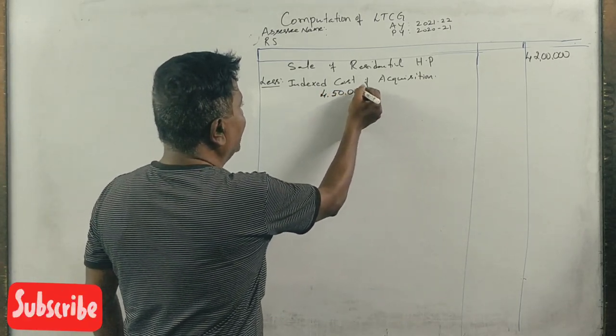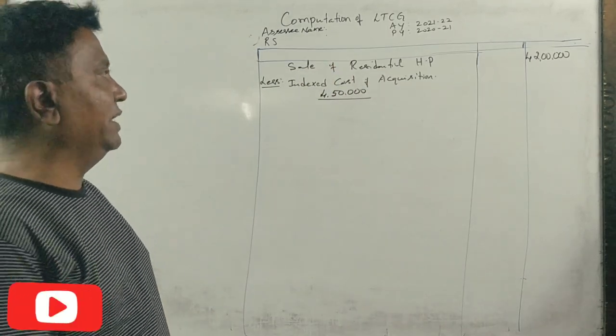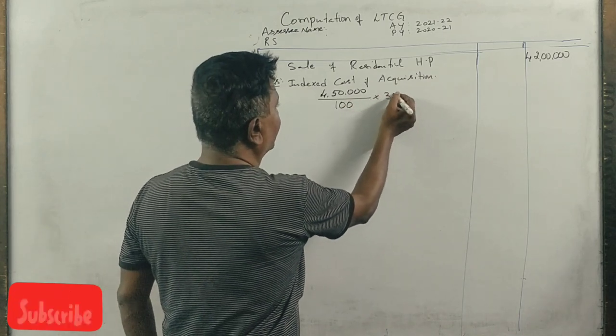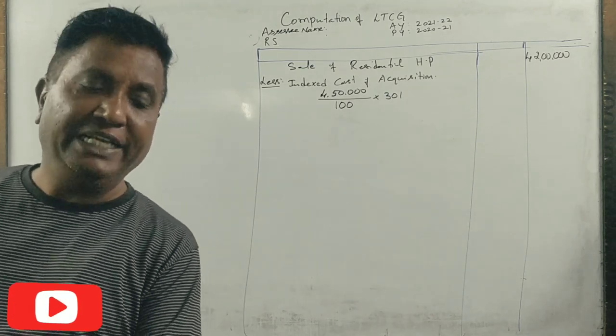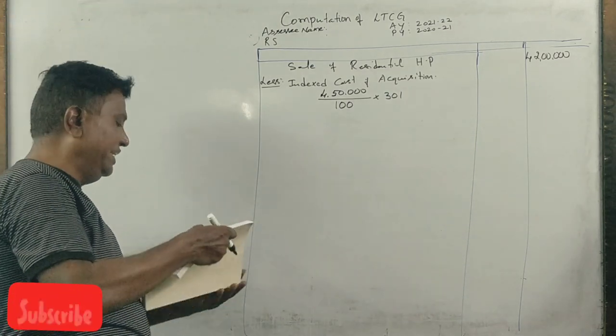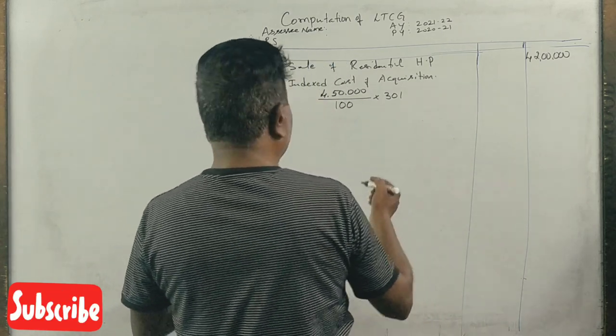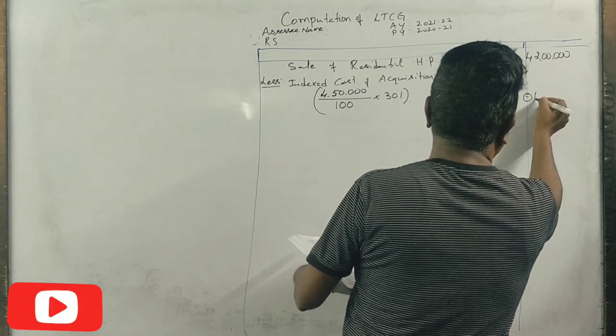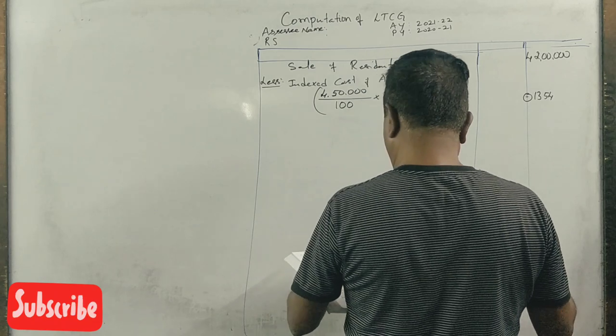Purchase in 2001-02, cost of inflation index was 100. In 2020-21 the index is 301. This calculation gives us 13 lakh 54,500 rupees as the indexed cost.